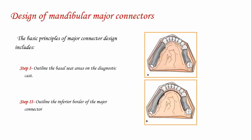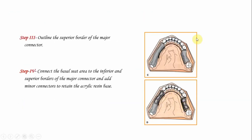The basic principles of mandibular major connector design include: first, outline the basal seat areas on the diagnostic cast; second, outline the inferior border of the major connector; third, outline the superior border of the major connector; and fourth, connect the basal seat area to the inferior and superior borders of the major connector, and add minor connectors to retain the acrylic resin base.